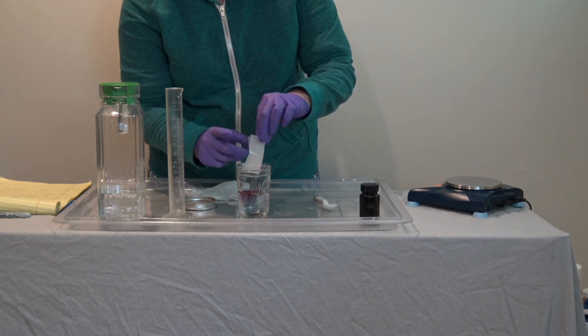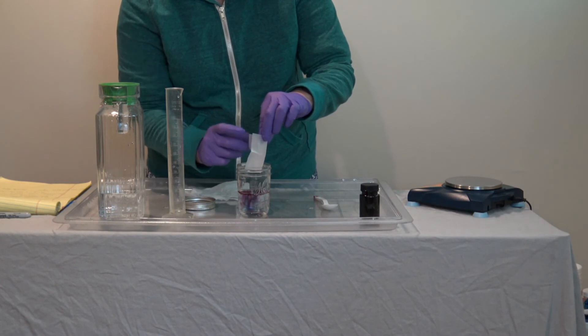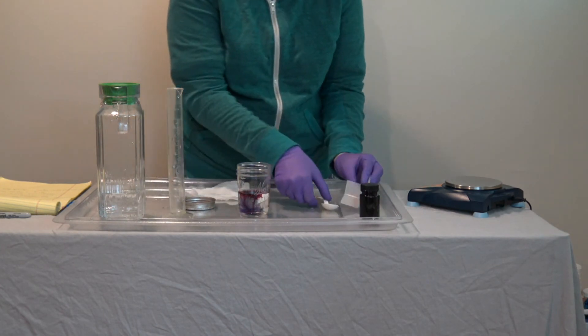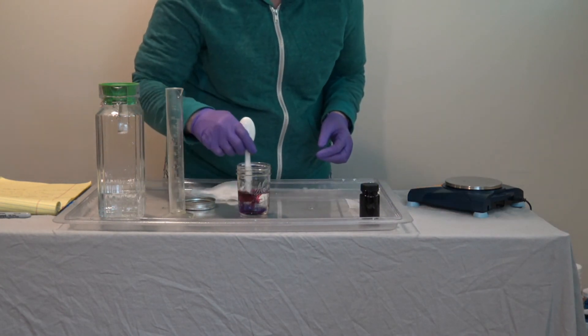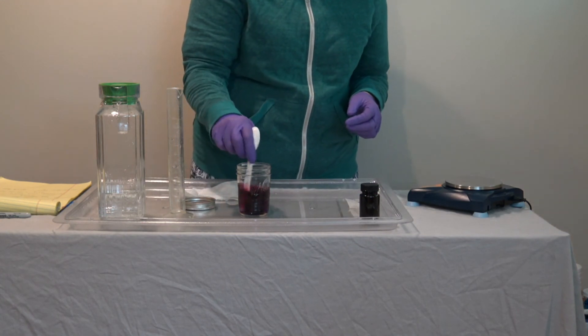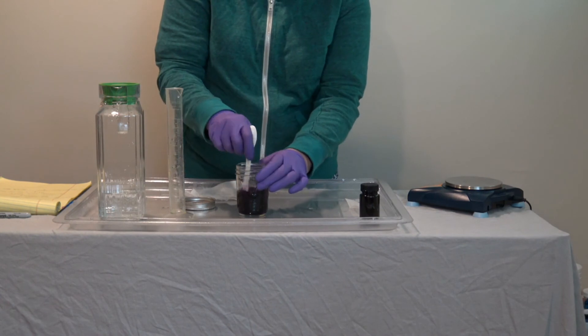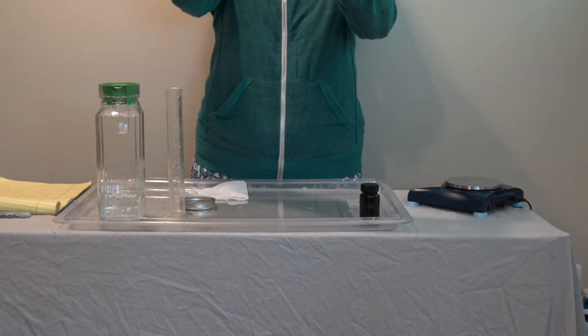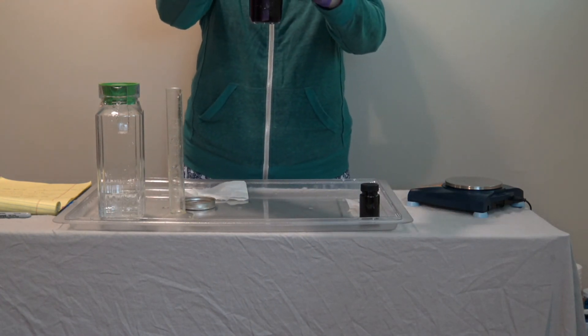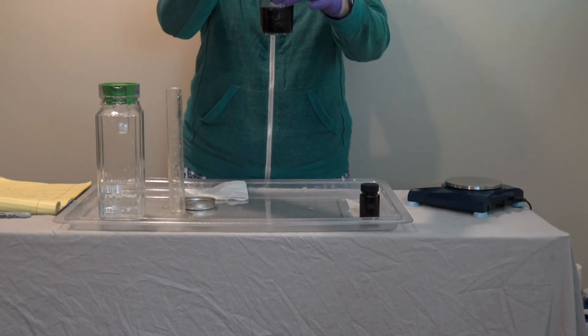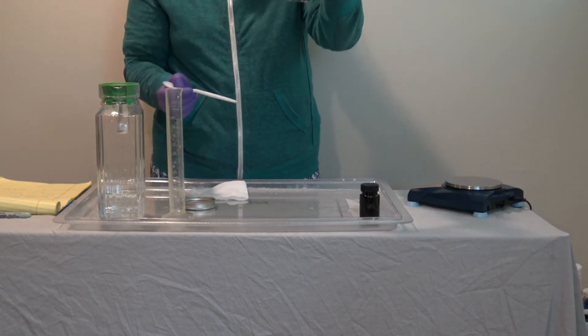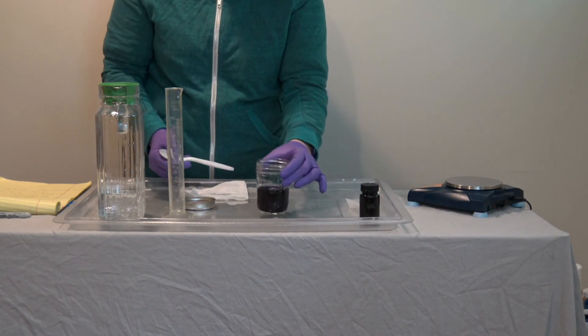I'm just going to tap this paper to get as much off of there as I can. And then I'm going to use this end to thoroughly mix until I'm sure that all of the powdered cabbage juice is dissolved, and it looks like it's dissolved. You're going to get a really dark purple solution.